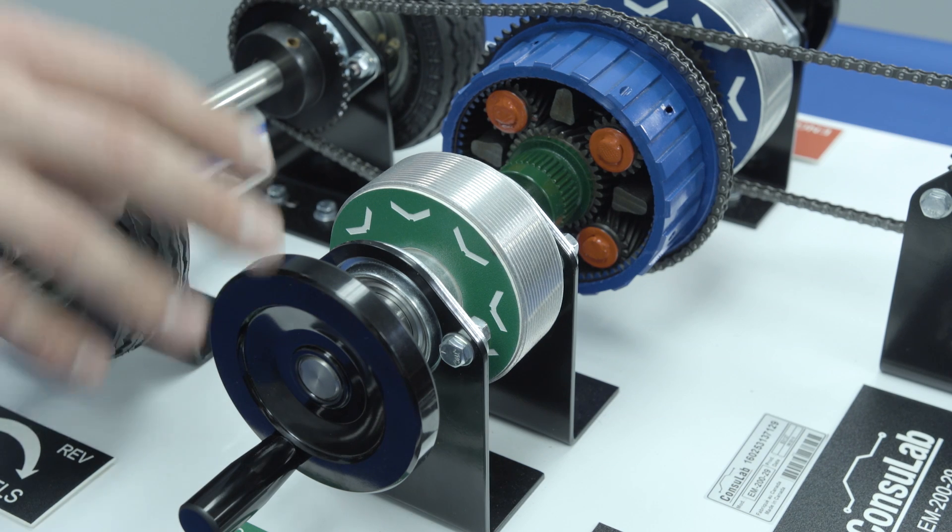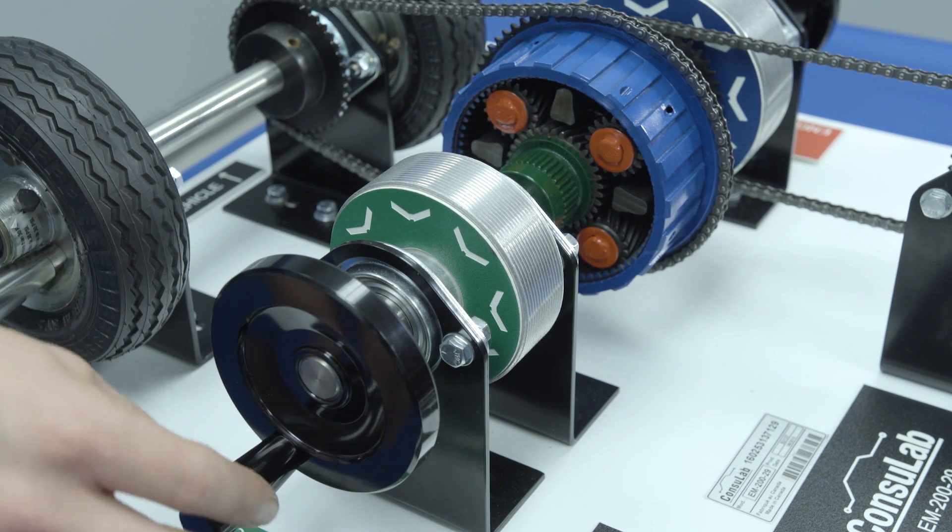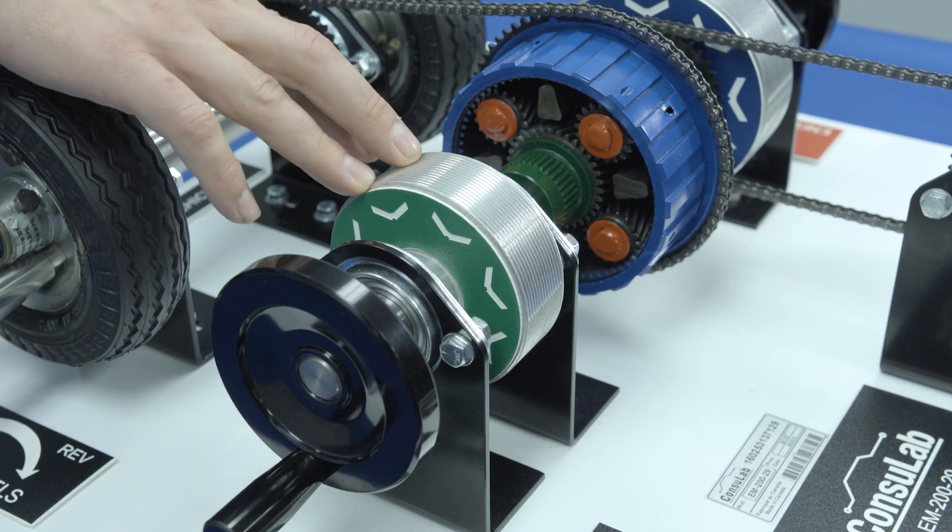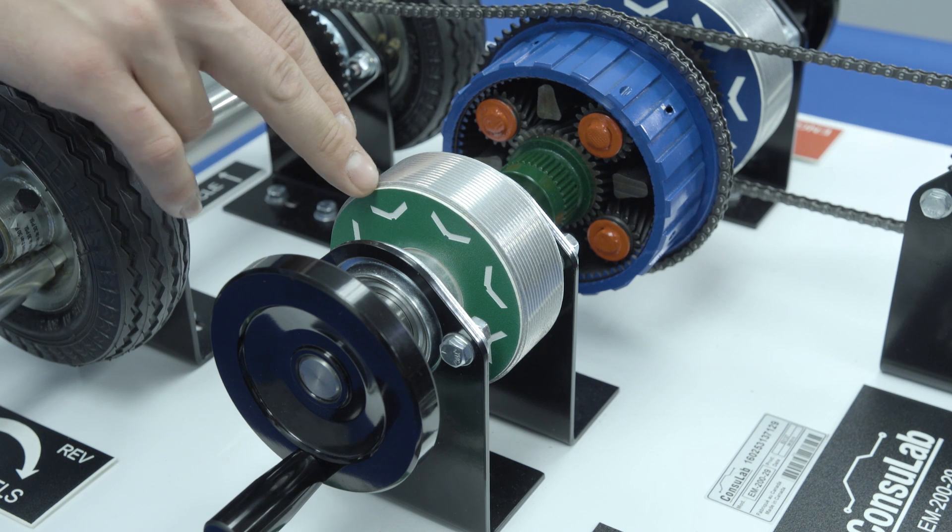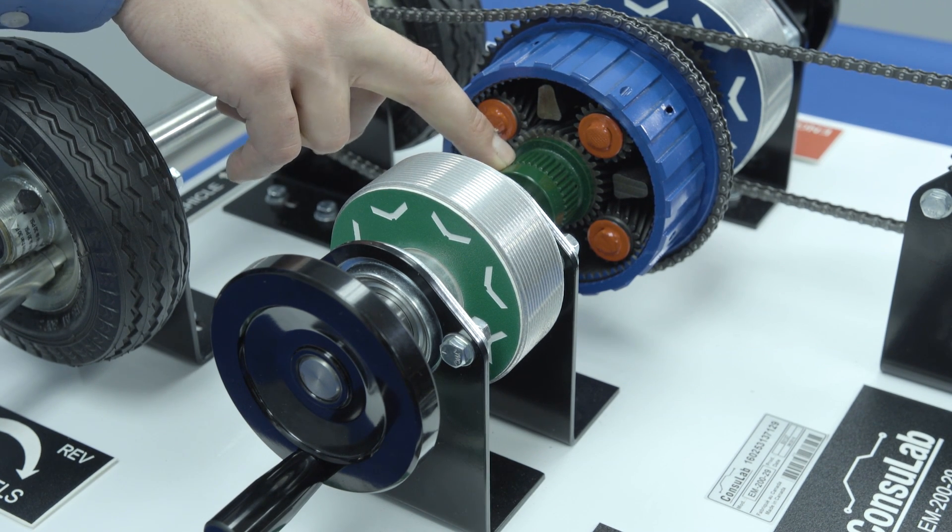Here we have motor generator number one which we've called MG1. We can turn it using the handle here and it is represented here with the color green. You'll notice this continues through on the same shaft to the green gear at the center of the planetary gear set, which is the sun gear.